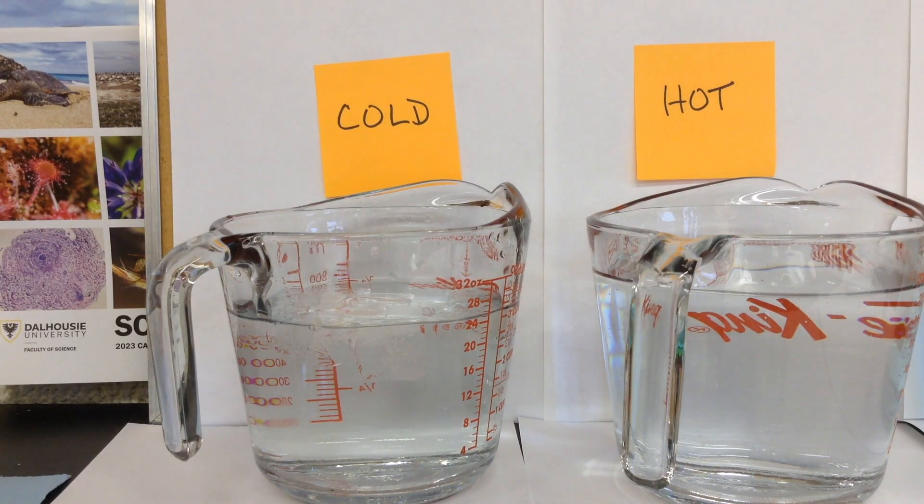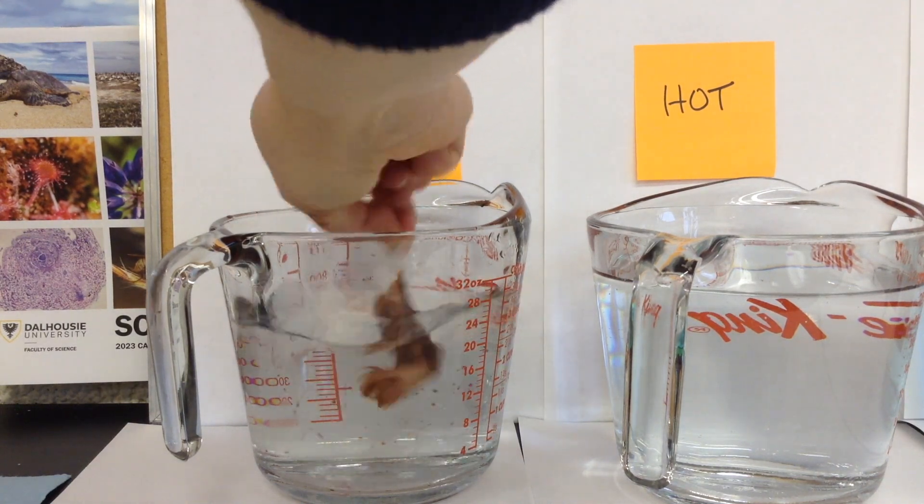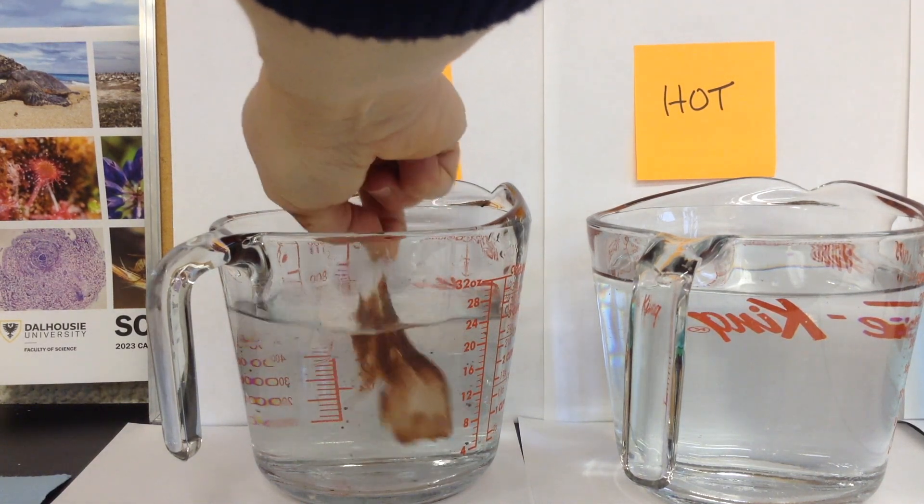So we will try out the cold water first. We have a fluffy feather. You can see some of it comes off and immediately forms little balls.